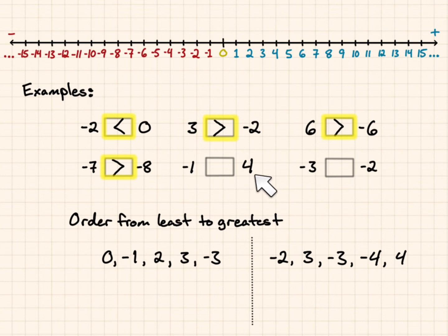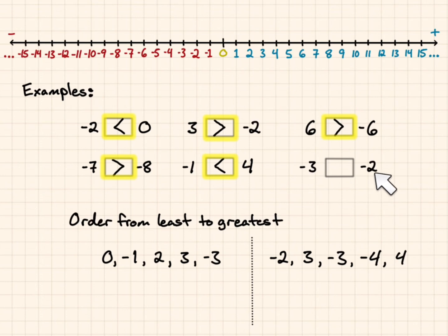Negative 1 and 4: I'll put those on the number line. Negative 1 is to the left of 4, so negative 1 is less than 4. For negative 3 and negative 2, I put them on the number line. I can see that negative 3 is further to the left, so it's less than negative 2.